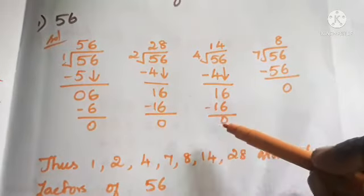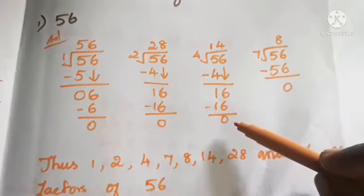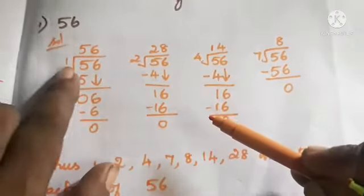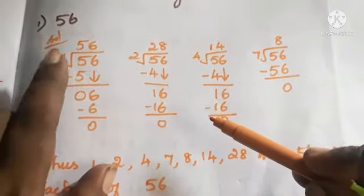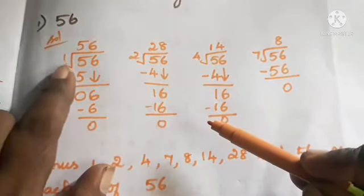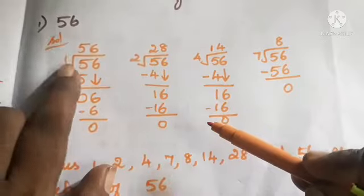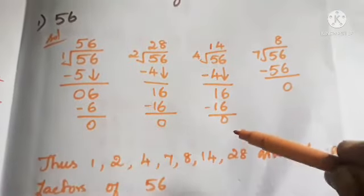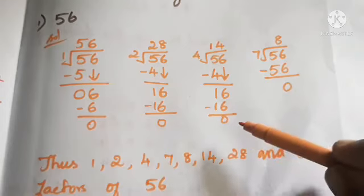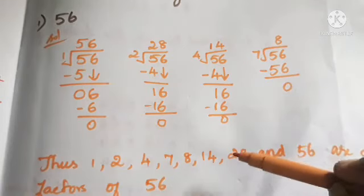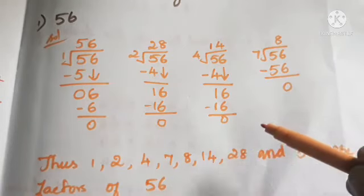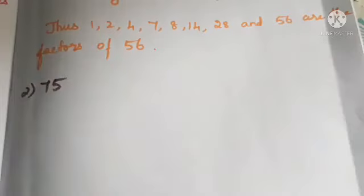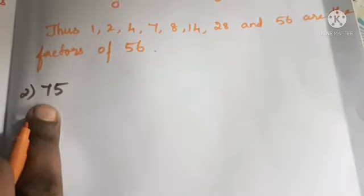When dividing to find factors, you get remainder 0 for the factor divisors. We start dividing from 1 because all numbers have 1 and themselves as factors. Only when the remainder is 0 do we take that number as a factor. Now let's do the next problem: find the factors of 75.